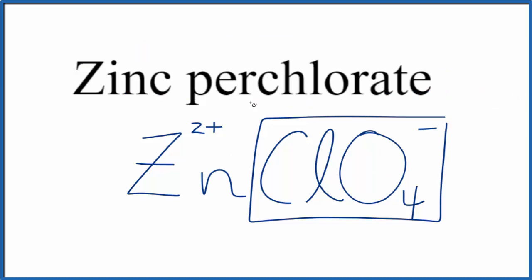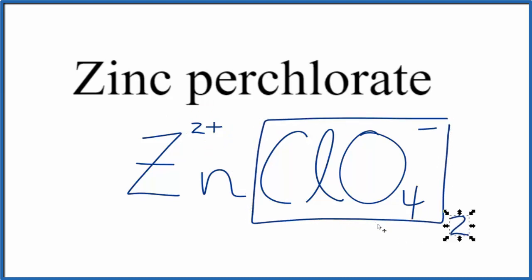To do that, if we had two perchlorate ions, 2 times 1 minus, that would be 2 minus, which would balance out the 2 plus. So let's replace this with parentheses since we have 2 perchlorate ions.